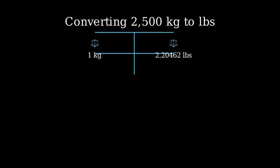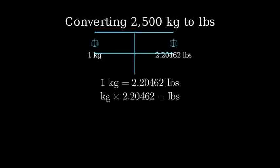To convert from kilograms to pounds, we multiply the number of kilograms by this conversion factor. Let's set up our calculation. We have 2,500 kilograms, and we'll multiply that by our conversion factor of 2.20462 pounds per kilogram.